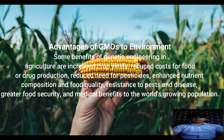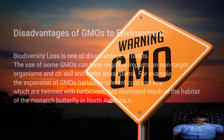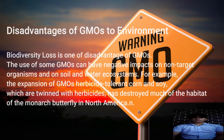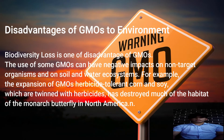Additional advantages include resistance to pests and disease, greater food security, and medical benefits to the world's growing population. However, one disadvantage is biodiversity loss — some GMOs can have a negative impact on non-target organisms and on soil and water ecosystems. For example, the expansion of GMO herbicide-tolerant corn and soy, which are twinned with herbicides, has destroyed much of the habitat of the monarch butterfly in North America.